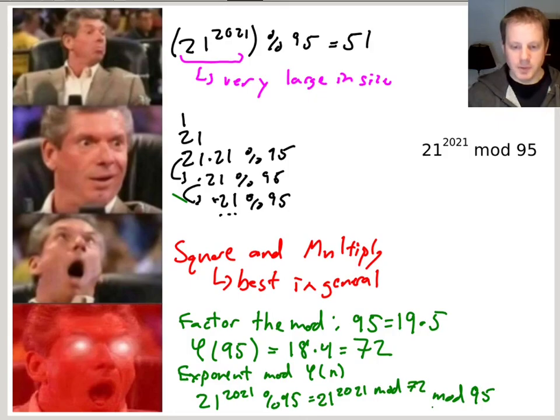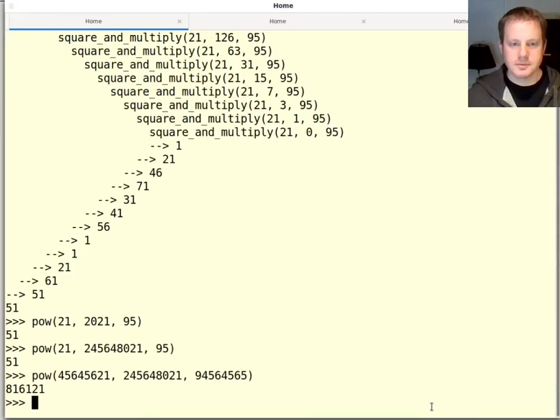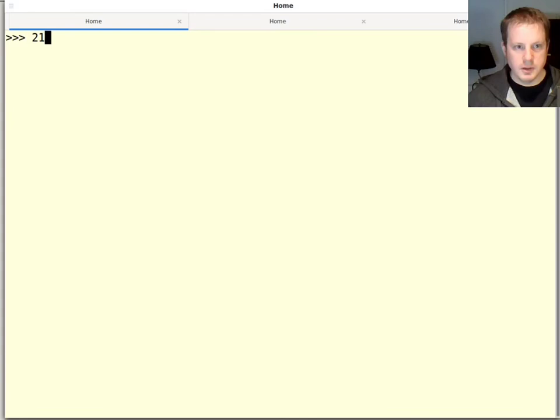So what does this mean? Well, what's 2021 mod 72? Let's find out. So 2021 mod 72 is just 5.